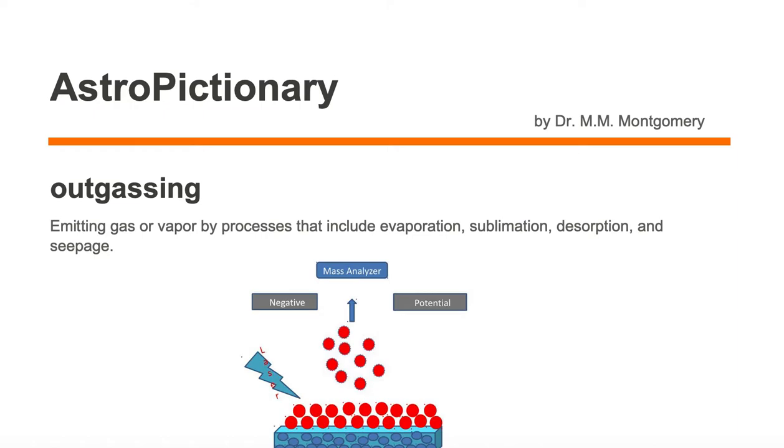Outgassing is emitting gas or vapor by processes that include evaporation, sublimation, desorption, and seepage.